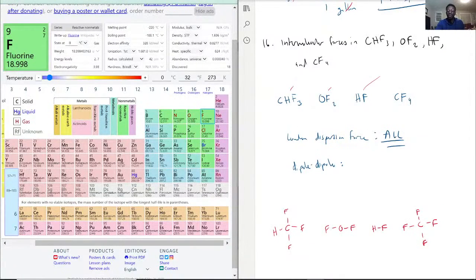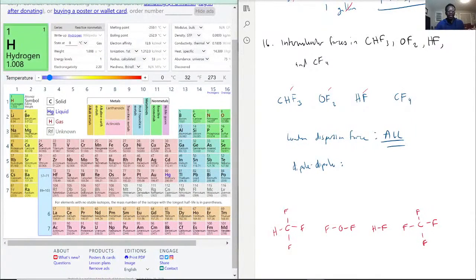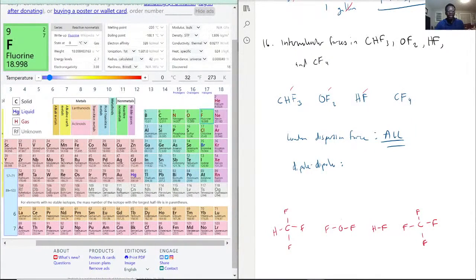HF is also dipole-dipole. Hydrogen is 2.2 and fluorine 3.98, so the difference is 1.78. Then CF4, similar to CHF3, we're still comparing carbon and fluorine. So it also has a dipole-dipole bond. All of them would have dipole-dipole.